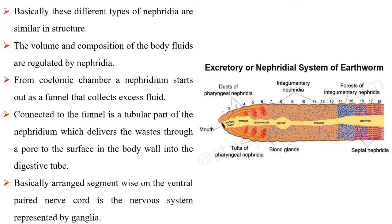Basically, these different types of nephridia are similar in structure. The volume and composition of the body fluids are regulated by nephridia. From the coelomic chamber, a nephridium starts out as a funnel that collects excess fluid. Connected to the funnel is a tubular part of the nephridium which delivers the waste through a pore to the surface in the body wall or into the digestive tube.